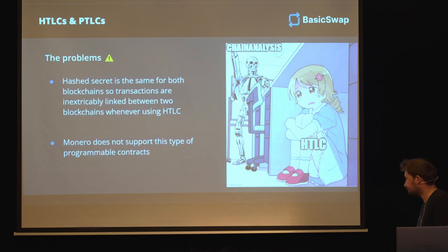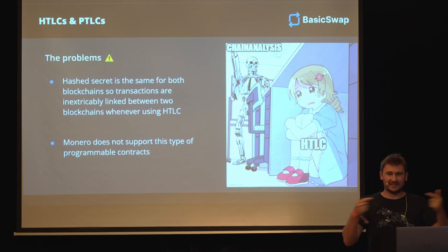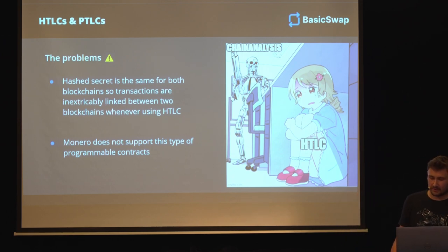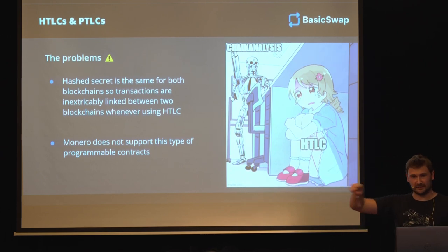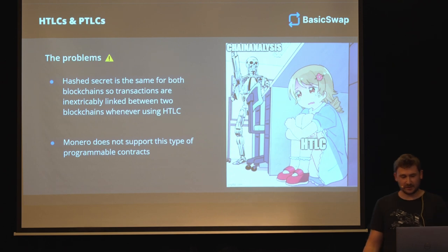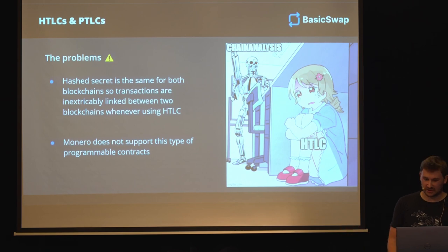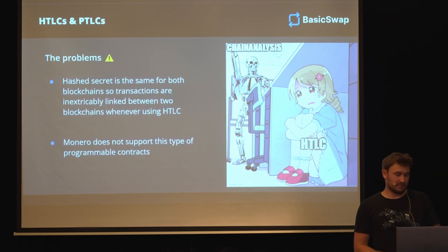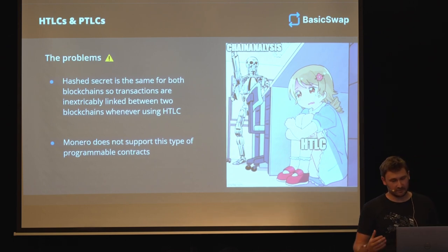So what are the problems? We have two contracts on two chains and they have the same hash, the same secret hash. And this kind of links them with each other. So we have a problem where anyone can suddenly see that these two transactions are linked - this is a swap, and it's this amount being swapped for that amount. That's problematic, because arguably in a centralized exchange only the exchange knows, but now suddenly everyone can figure it out. And another problem, especially in this context, is that Monero simply does not support this type of programmable contracts. So we cannot make this work.